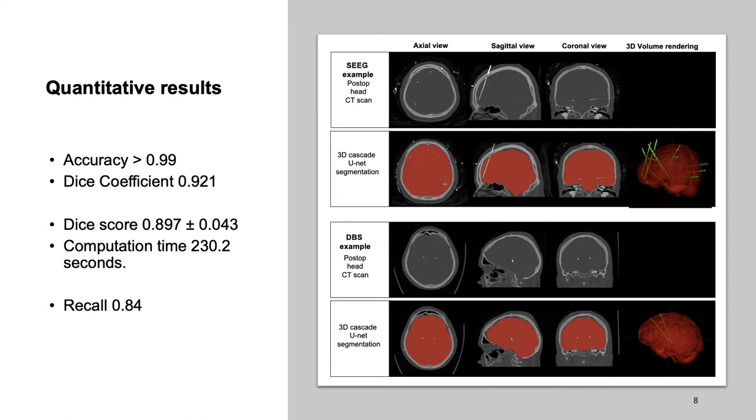Quantitative results of the test set are 0.89 for mean DICE score and it was computed for average time of 230 seconds. Recall of 0.85 for electrode segmentation is reached which shows that the network finds 85% of the voxels segmented in the ground-truth of the electrodes.